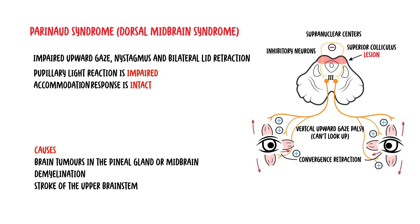Another manifestation is bilateral lid retraction, due to loss of supranuclear input to the third nerve nucleus. Without the inhibitory effects of the supranuclear fibers at the posterior commissure, the levator palpebrae superioris receives constant stimulation via the oculomotor nerve, resulting in lid retraction. Finally, Parinaud syndrome presents with Argyll-Robertson pupil — also known as light-near dissociation — where one can accommodate but does not respond to light, due to injury to the posterior aspect of the midbrain.